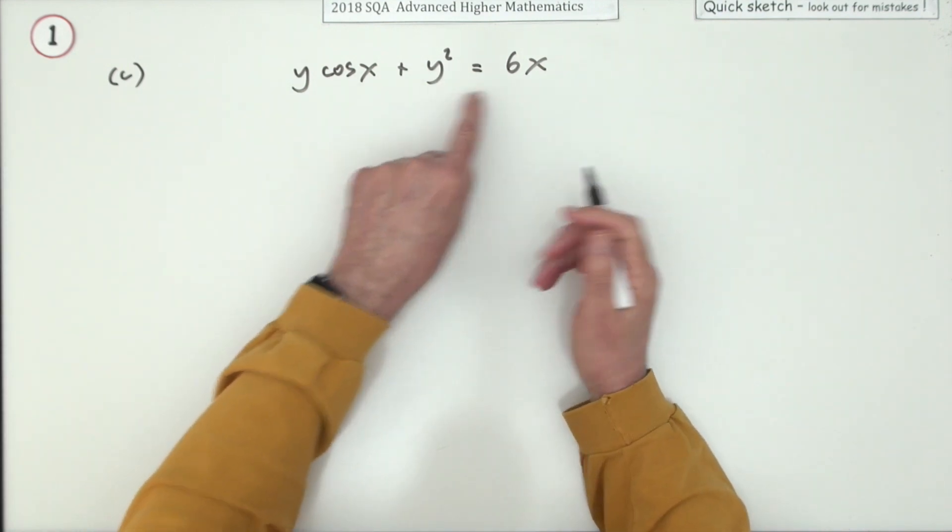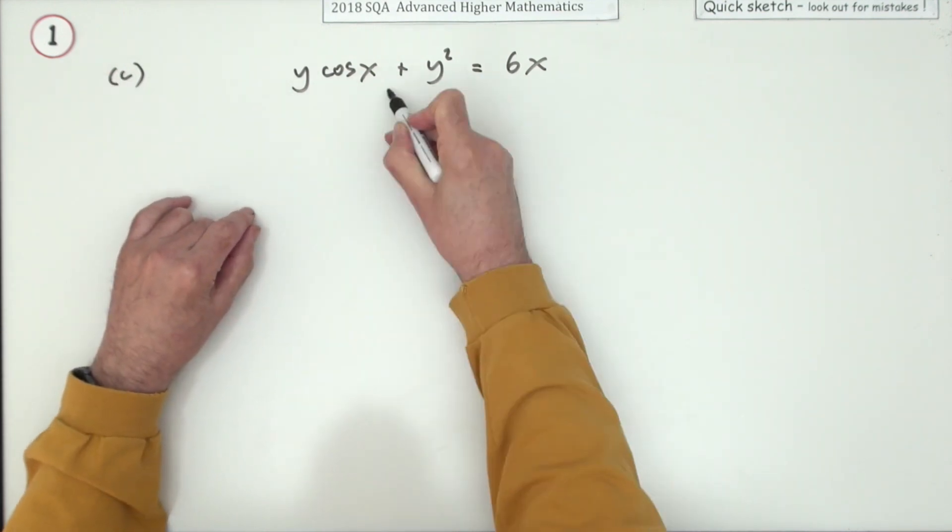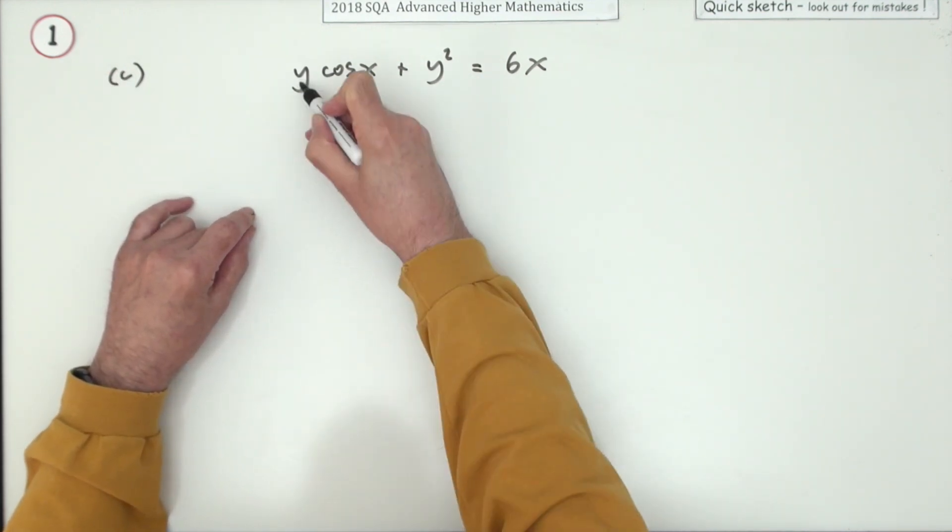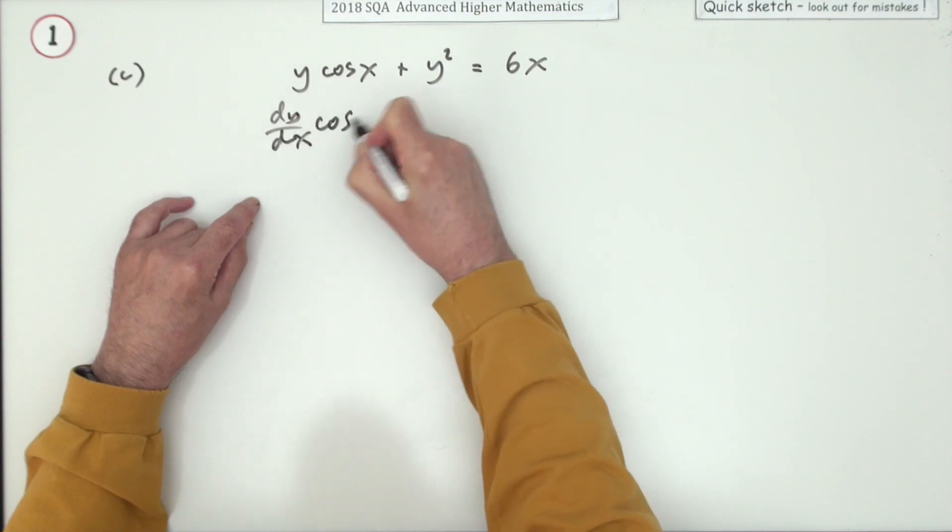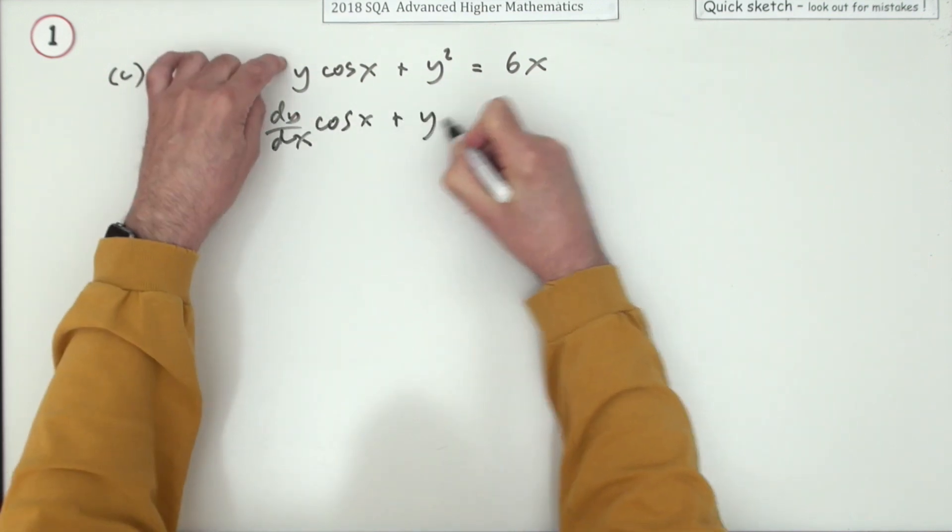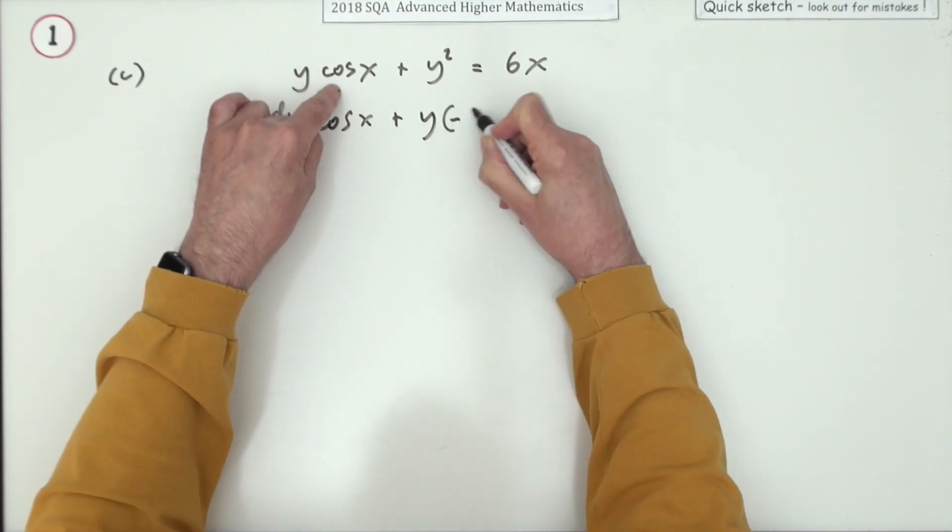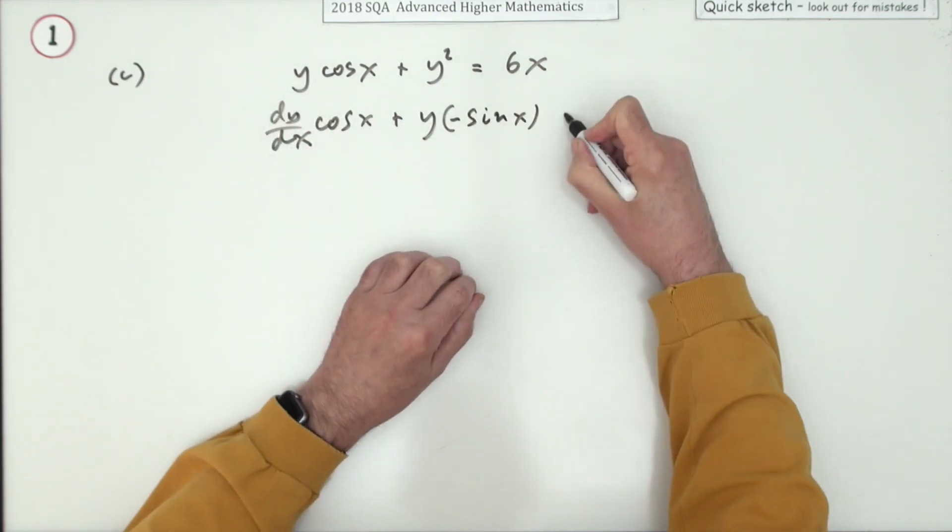Well there's several parts here. That means differentiate each of the parts obviously. So the first part is you've got a product. So differentiating that would be dy/dx, leave that as cos x, and then leaving that alone, differentiate that to negative sin x.